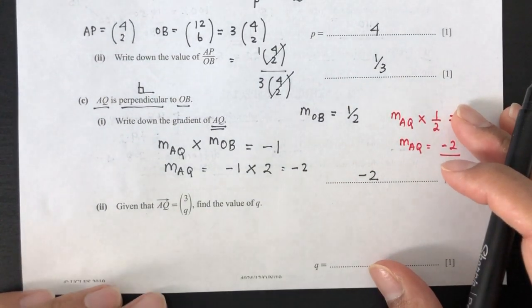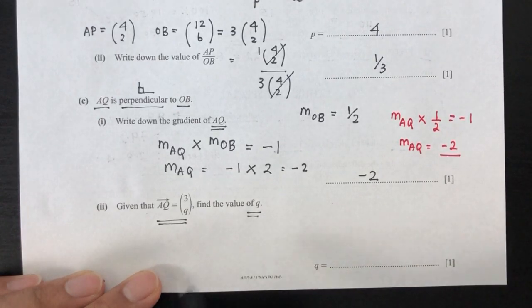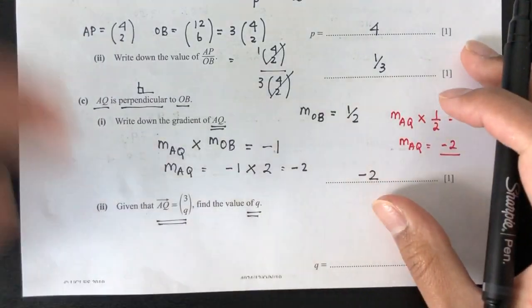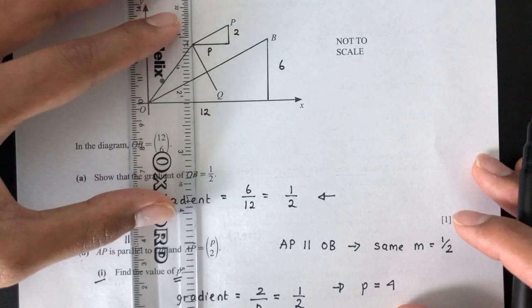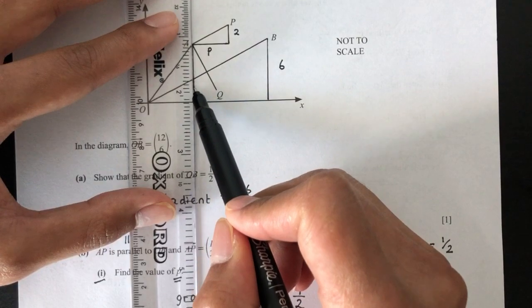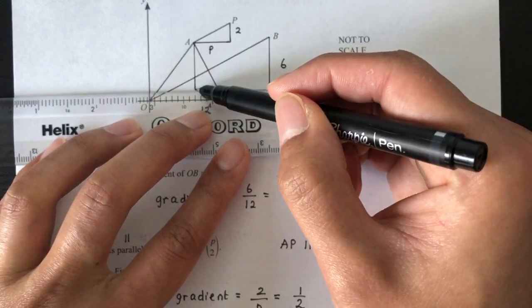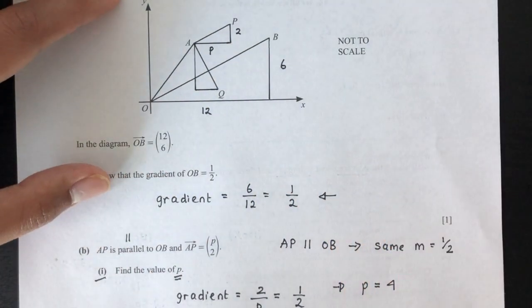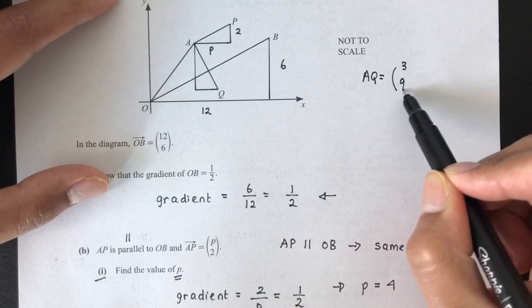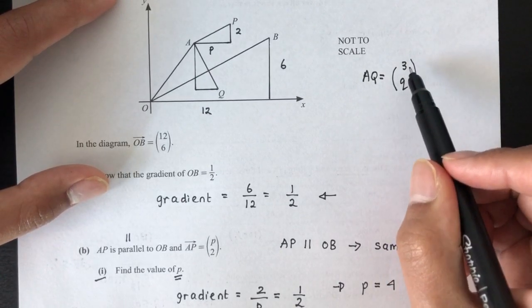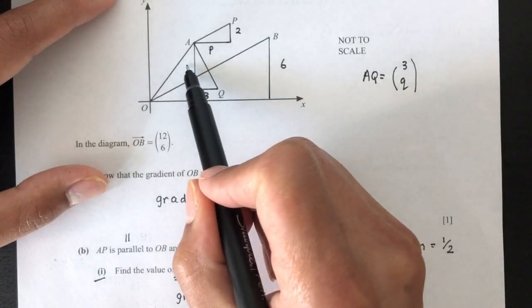Now moving on to part 2. Given that AQ is equal to this, find the value of Q. Again, if you go back to your graph, AQ is this one. So if you want to join those two, we can do that. So we always have to form a right-angled triangle to be able to find the gradient. So AQ is given to you by 3Q. Now 3 is your horizontal distance that you move, which is this one, 3. And Q will be this height.